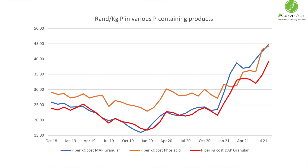This is a trend that farmers in South Africa who use liquid fertilizers should take note of, because the phosphate source for liquid fertilizers is phosphoric acid. The phosphate in MAP and DAP — the dry phosphate products — is cheaper on a unit of phosphate basis than phosphoric acid.